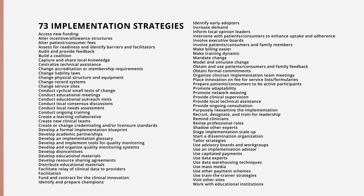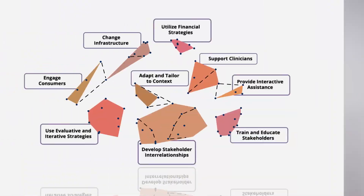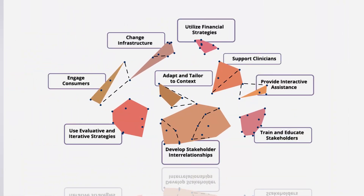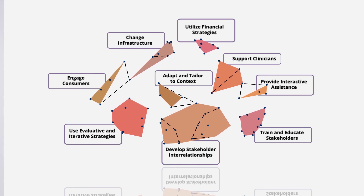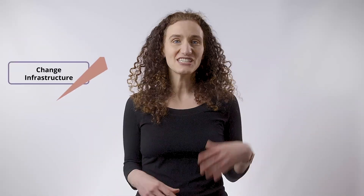Because 73 is a big number, another implementation scientist — who is also not named Eric — Tom Waltz, engaged implementation scientists to use concept mapping to group the 73 strategies into what became nine clusters. These include things like financial strategies, infrastructure changes, and stakeholder engagement.